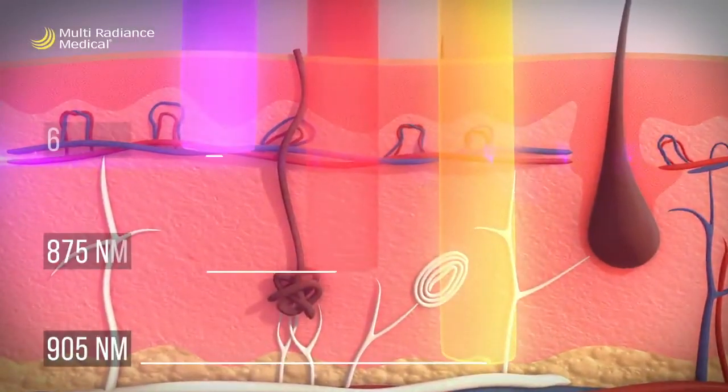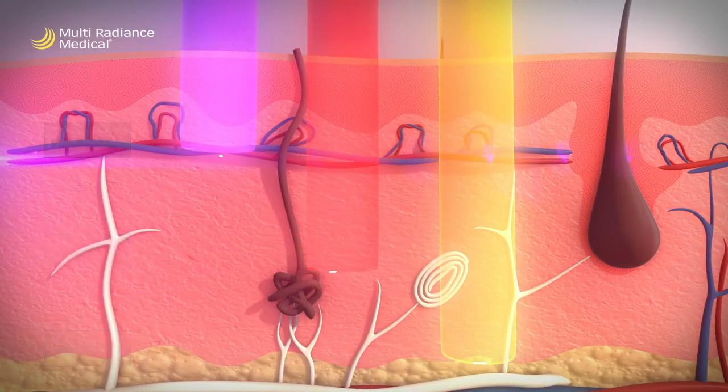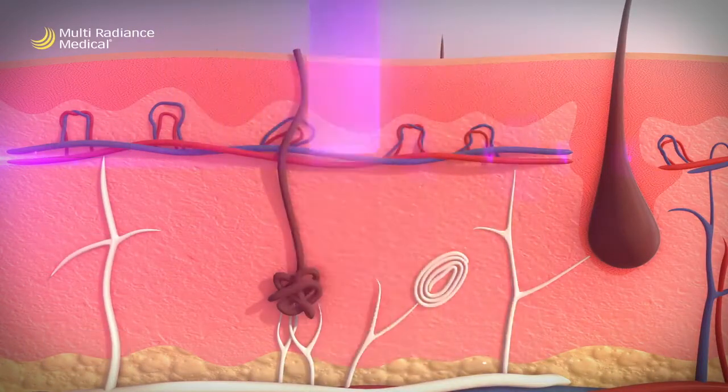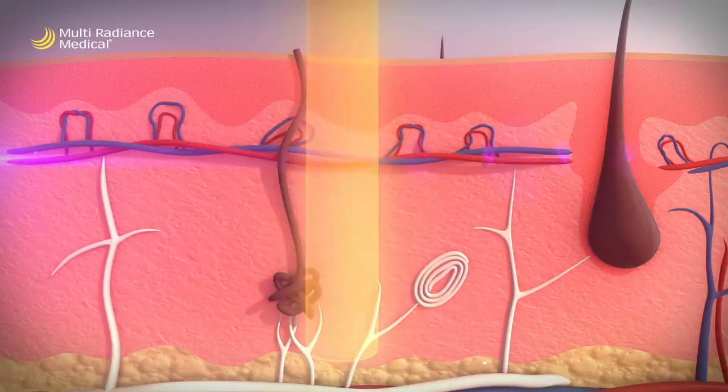The super pulsed laser at 905 nanometers provides high powered light in 100 billionths of a second pulses that drive photons up to 10 to 13 centimeters deep into the tissue without a harmful thermal effect.